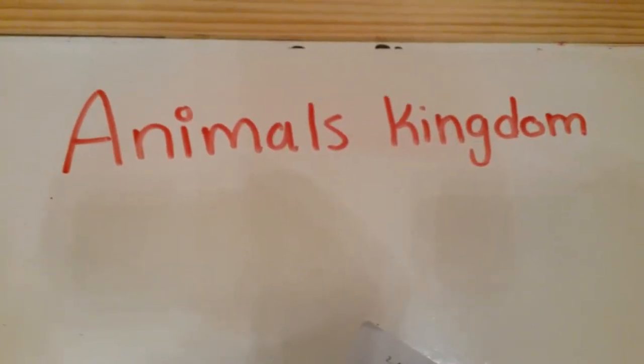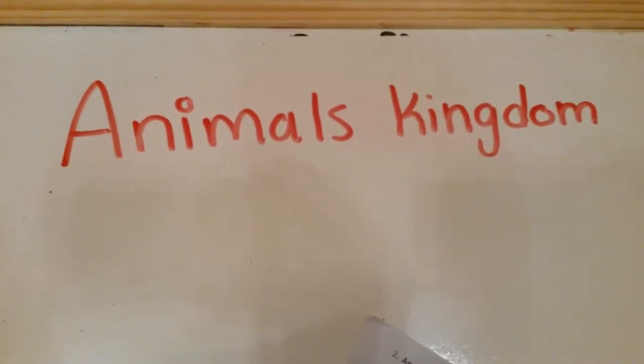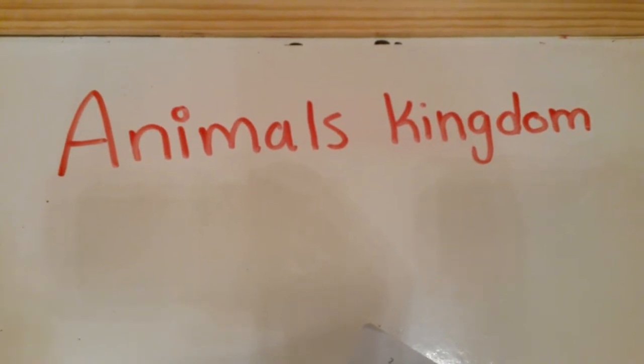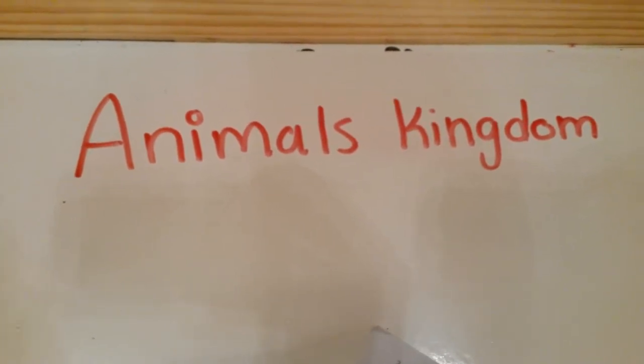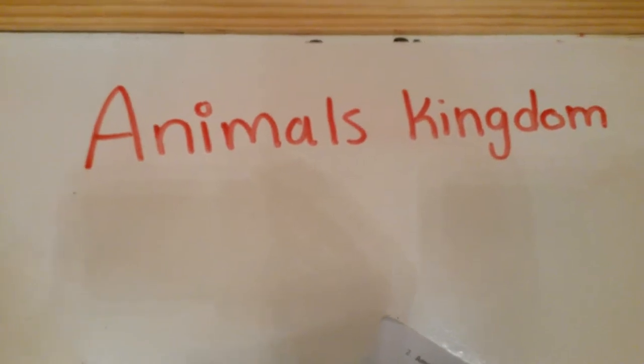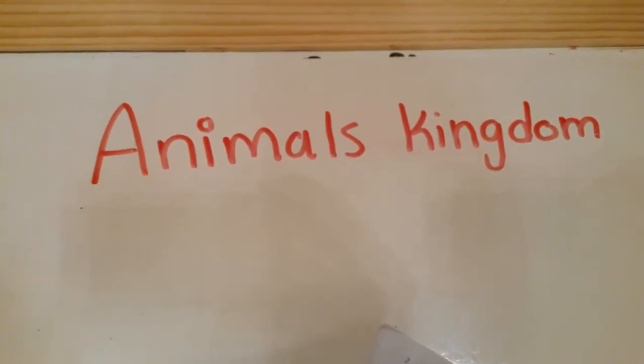Today we're going to talk about the animal kingdom. There are many different types of animals in the world. Many animals are quite similar to each other. Others are quite different. Animals can be classified based on their similarities.